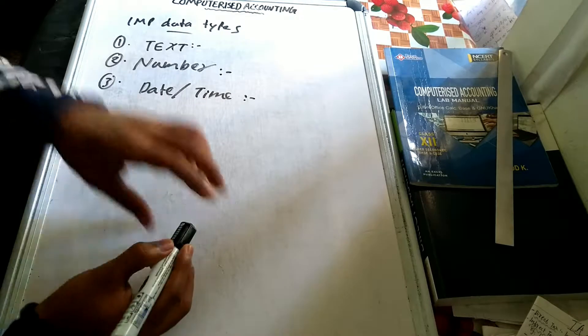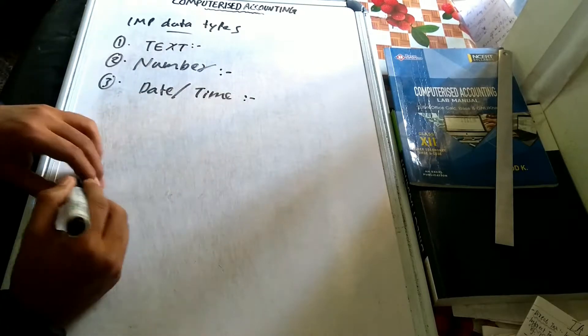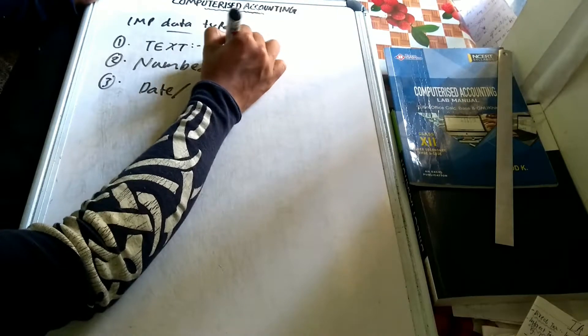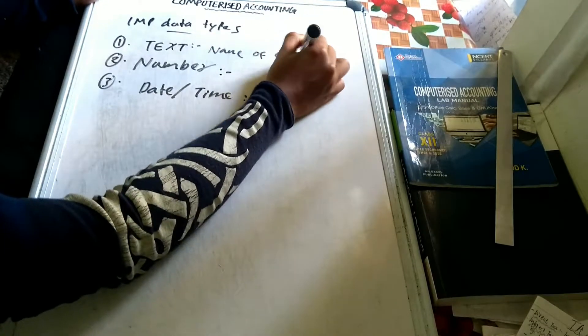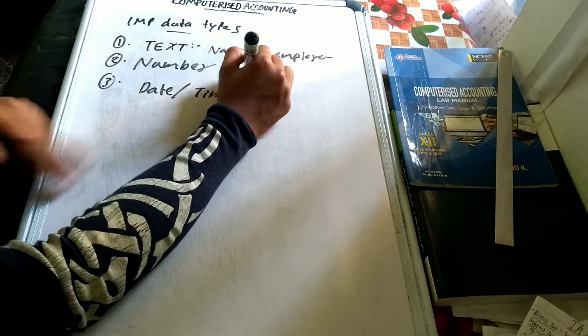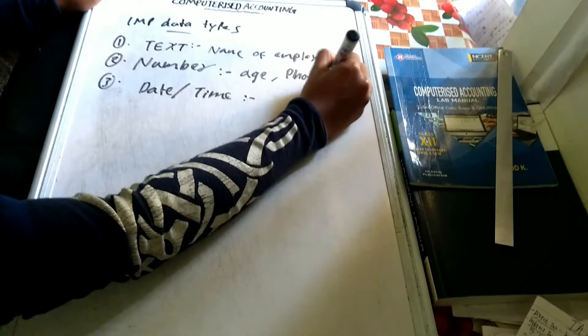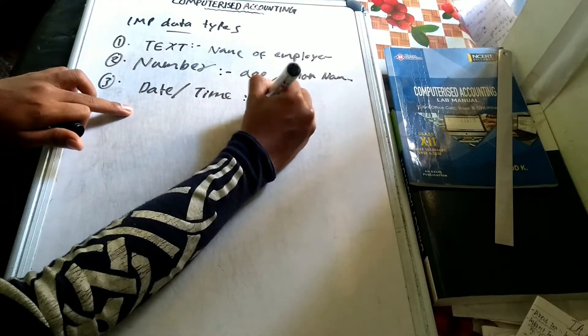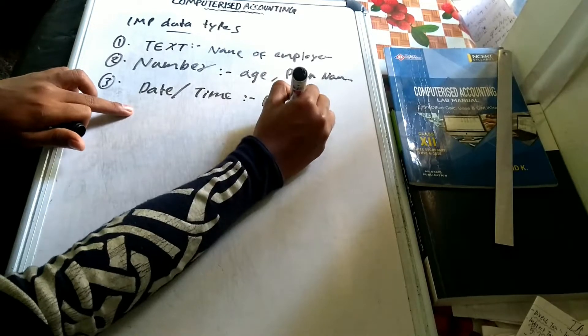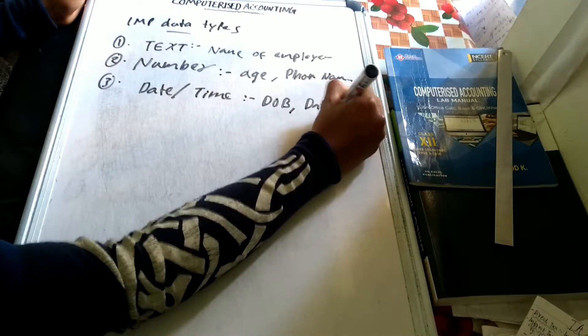Next is date or time. Date and time — for example, date of joining and date of birth. Phone number along with date and time fields like date of birth and date of joining.